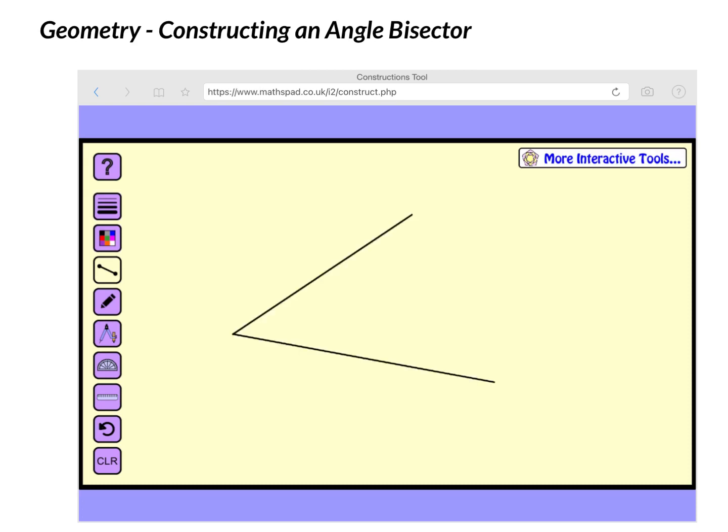In this video, we're going to talk about how you would construct an angle bisector. Just a reminder of what these words mean. An angle is just formed by two segments or two rays, two lines.